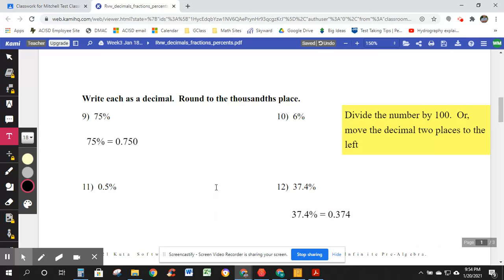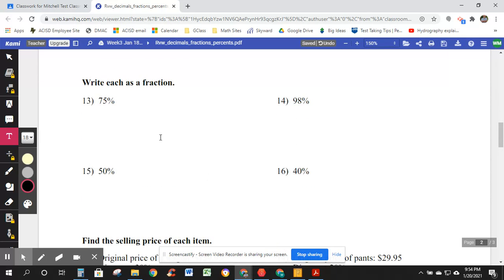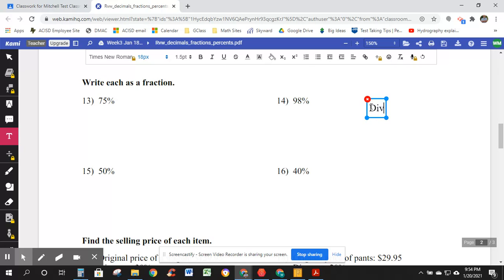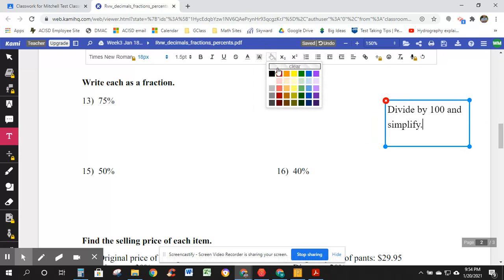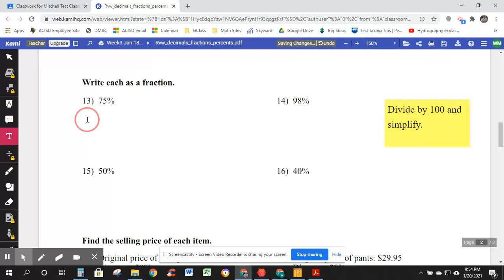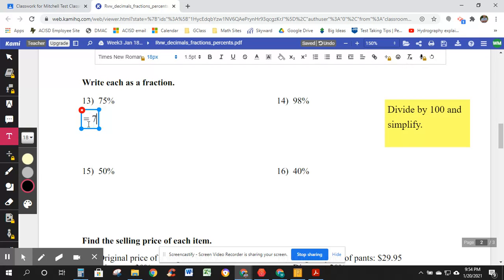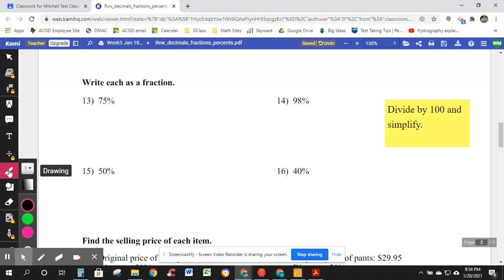We're doing okay so far. Write each as a fraction. So, I'm at the top of the next page and it's number 13. And if I was going to pick a way to kind of summarize how to handle these, I would say, divide by 100 and simplify. Make that into a little note. Yellow out here to the side. Divide by 100 and simplify. equals 75. I got a new idea. Let's try writing with the mouse.